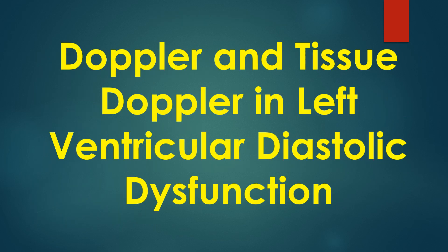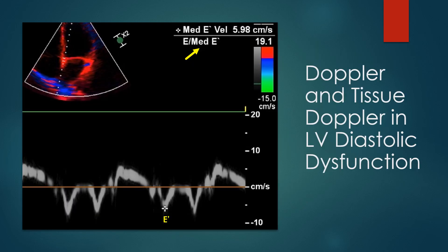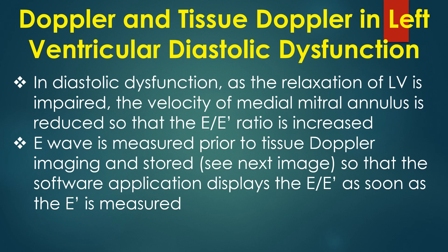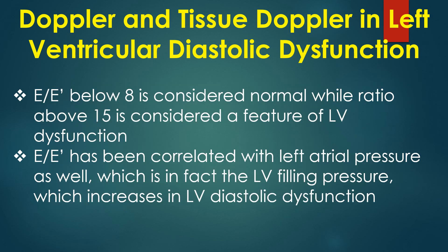Discussion on Doppler and tissue Doppler in left ventricular diastolic dysfunction. A tissue Doppler image with colour kinesis in the inset shows E/E' of the medial mitral annulus as 19.1, indicating left ventricular diastolic dysfunction. In diastolic dysfunction, as relaxation of the LV is impaired, the velocity of the medial mitral annulus is reduced so that the E/E' ratio is increased. E wave is measured prior to tissue Doppler imaging and stored so the software displays E/E' as soon as E' is measured. E/E' below 8 is considered normal while a ratio above 15 is considered a feature of LV diastolic dysfunction.